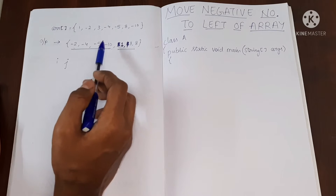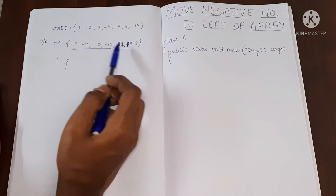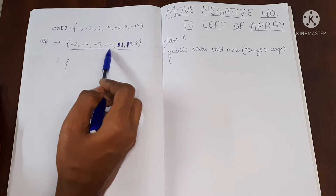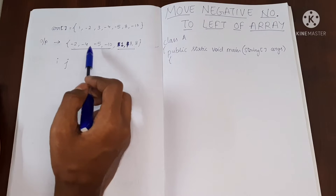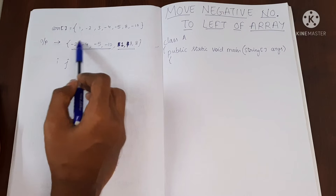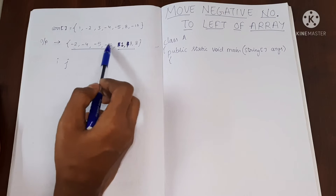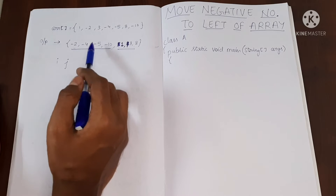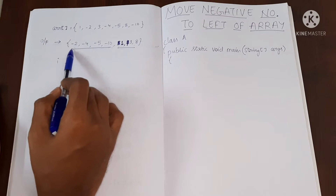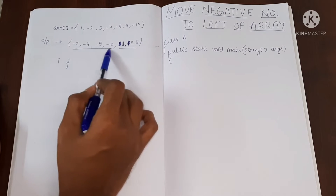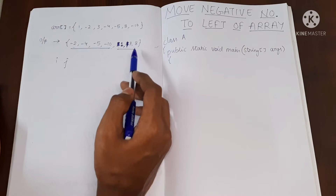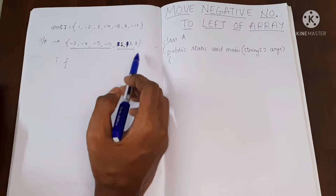Also note that the order in which these values are present does not matter — that is, they can be shuffled among themselves. All we need is all the negative numbers at the beginning of the array and the positive numbers towards the end of the array.